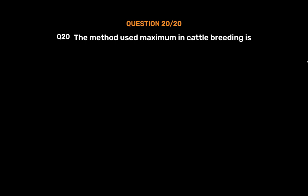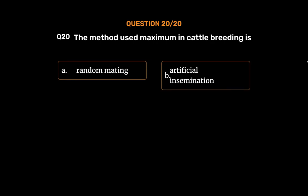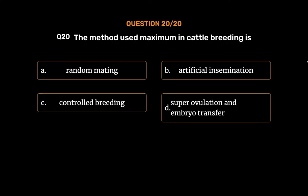Question 20: The method used maximum in cattle breeding is — Option A: Random mating. Option B: Artificial insemination. Option C: Controlled breeding. Option D: Superovulation and embryo transfer. The correct answer is Option D: Superovulation and embryo transfer.